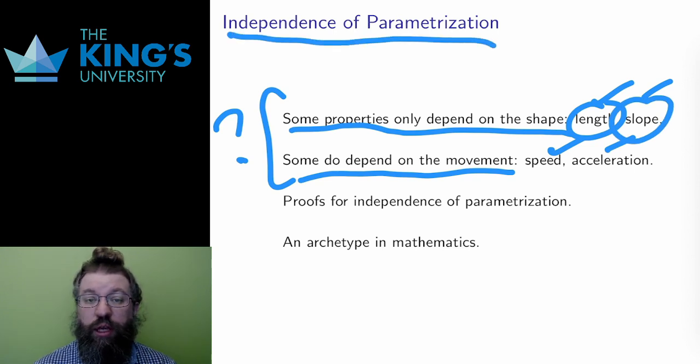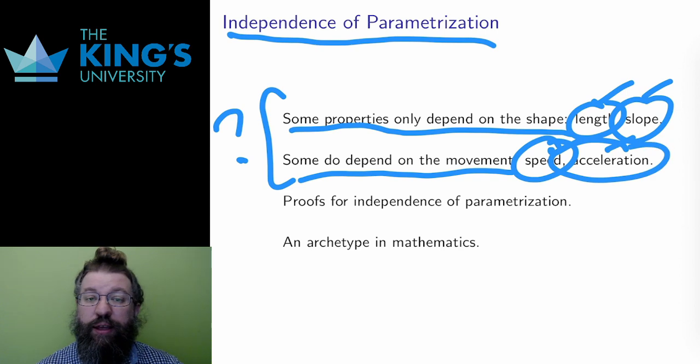Slope is another of these. The slope is the same regardless of how fast the movement is along the curve. The speed, however, should depend on the details of the movement. And similarly, the acceleration, however that is calculated, should also depend on the movement.